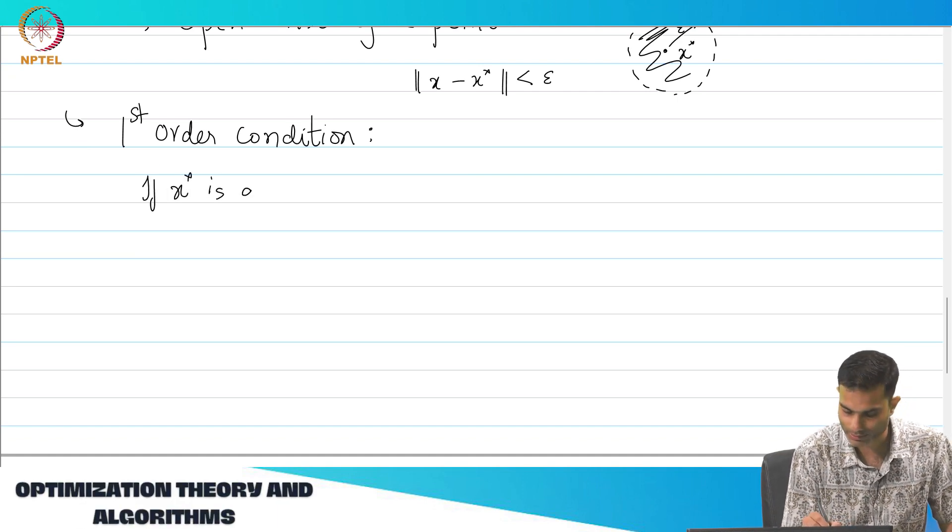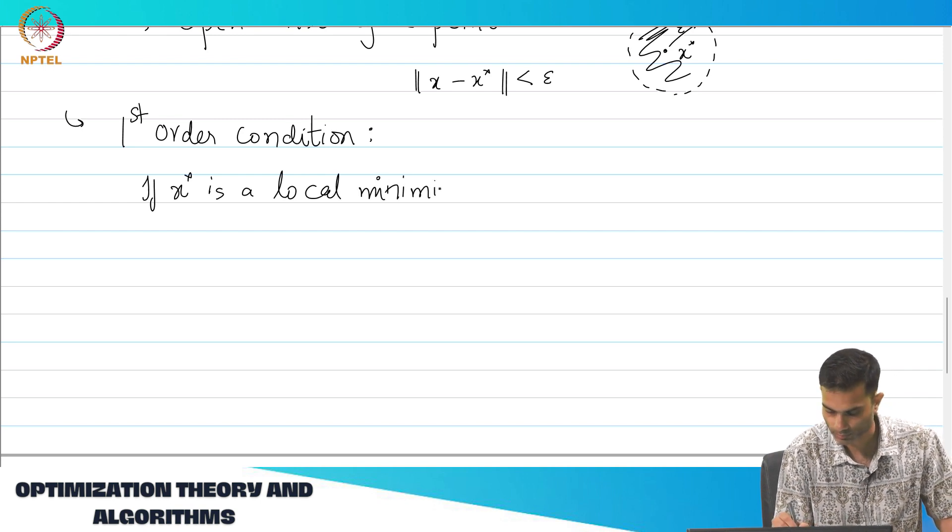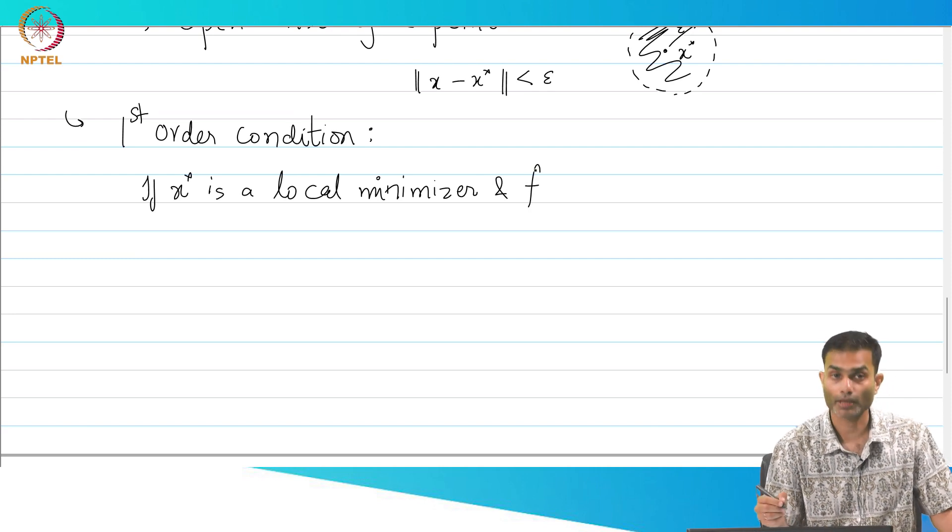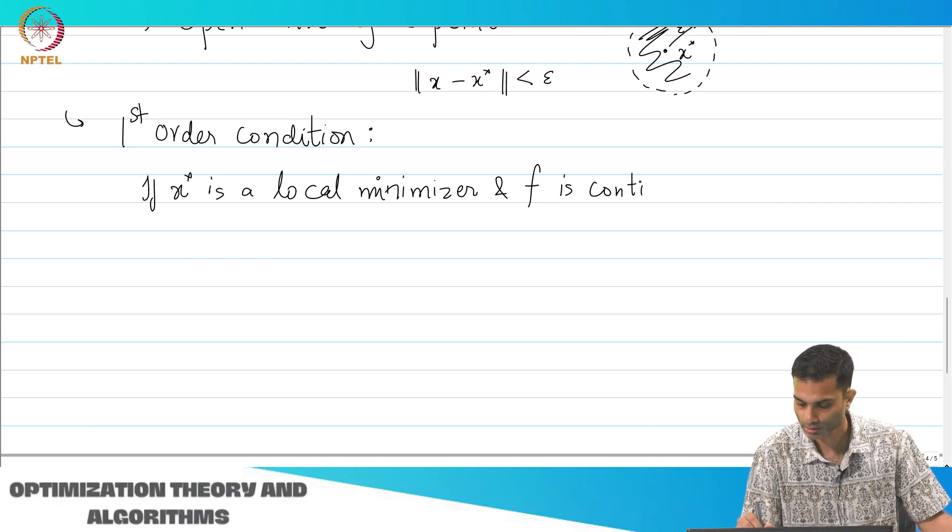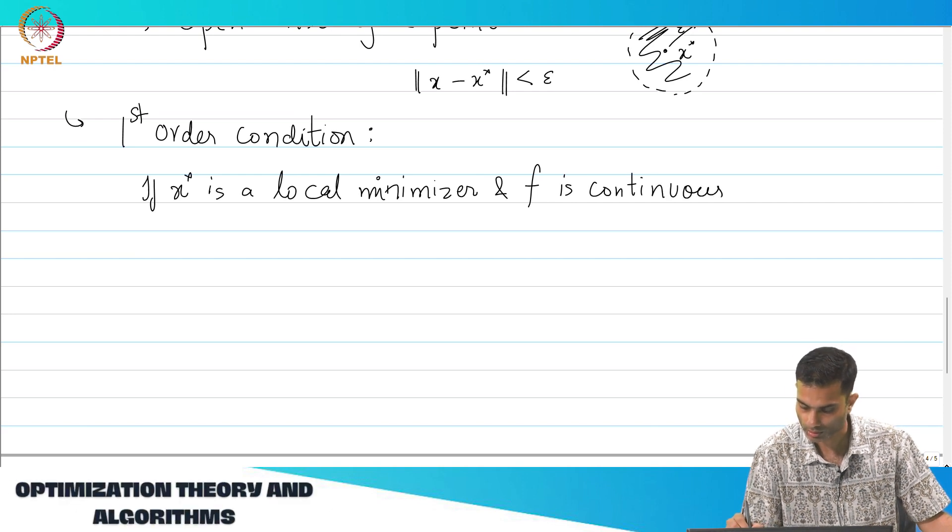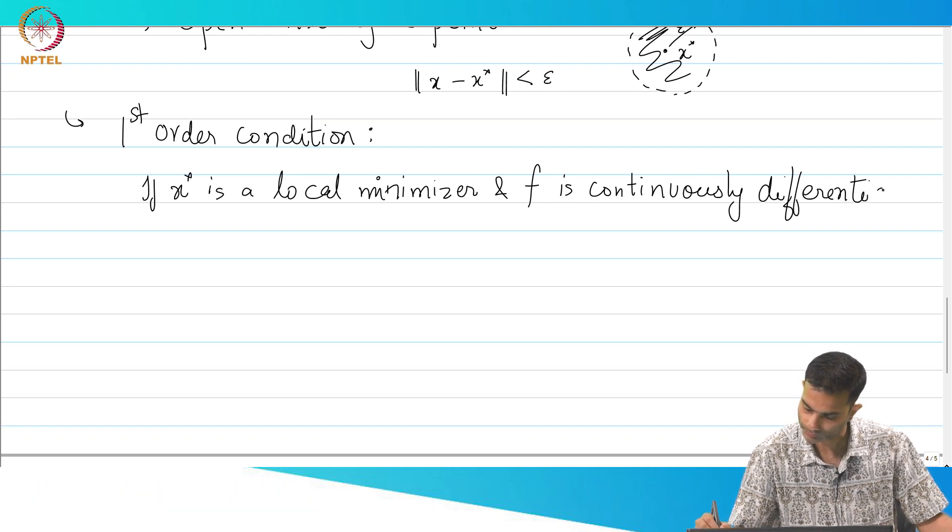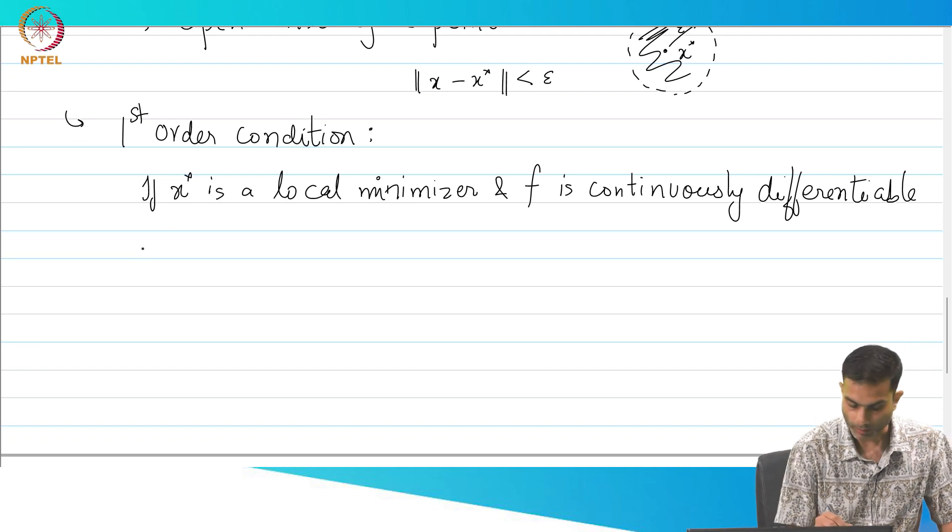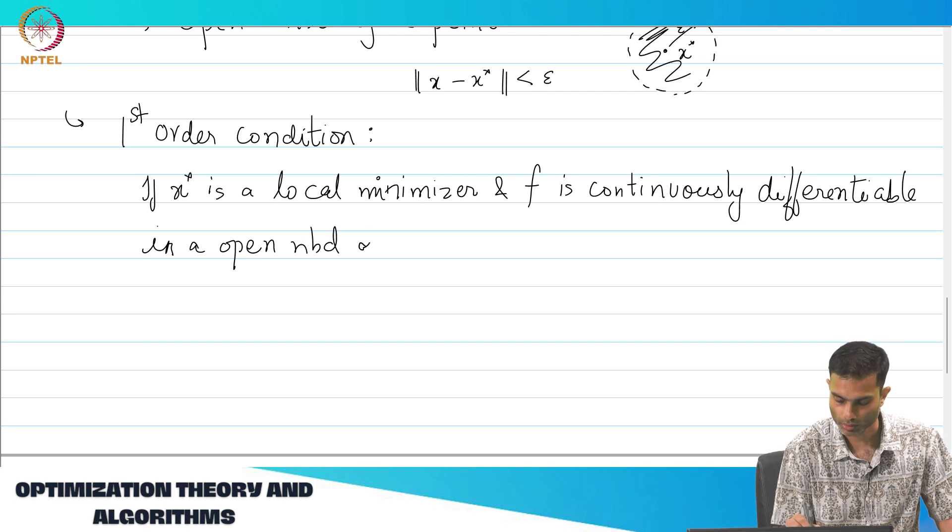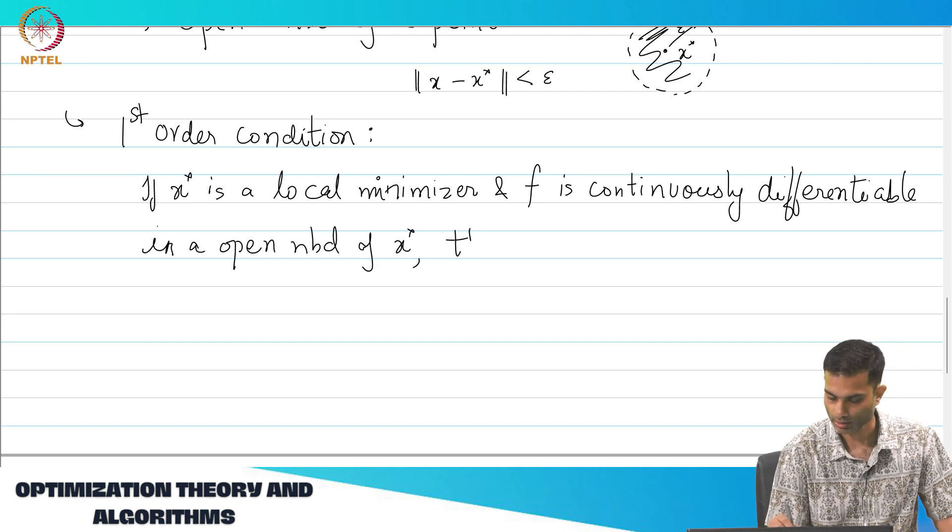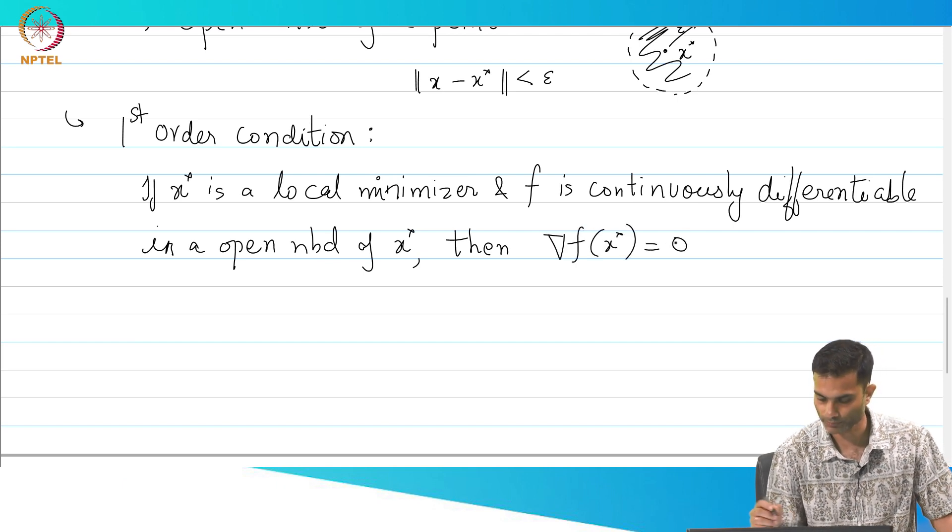If x* is a local minimizer, but I also have to say that f has to be differentiable, right, in an open neighborhood of x*, then grad f(x*) is equal to 0.